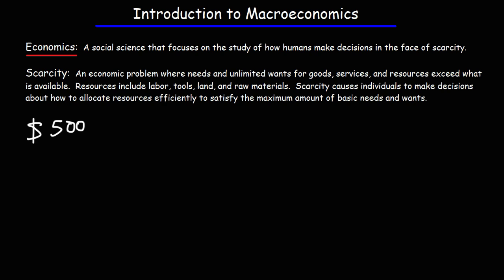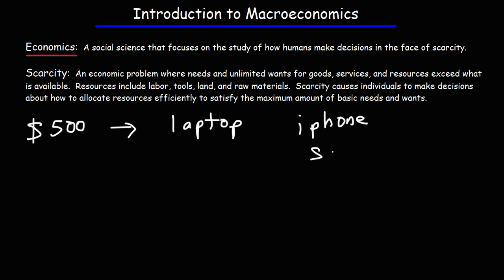Here's an example. Let's say you have five hundred dollars and there are two things that you want — you want a laptop and you want to buy an iPhone. For the sake of keeping things simple, let's say the iPhone costs four hundred dollars. Chances are today it might be much more than that, but just for the sake of illustration.